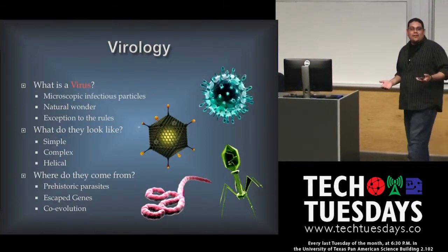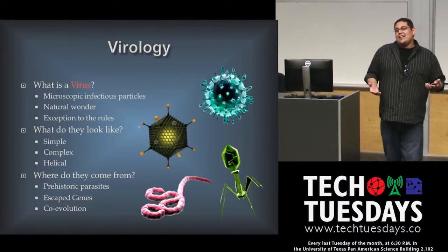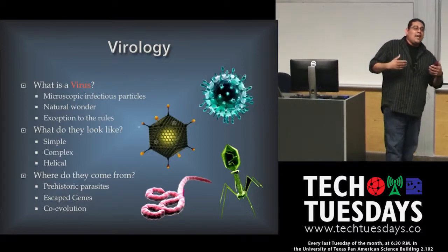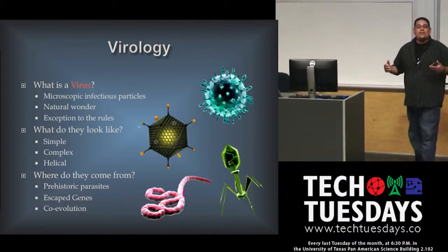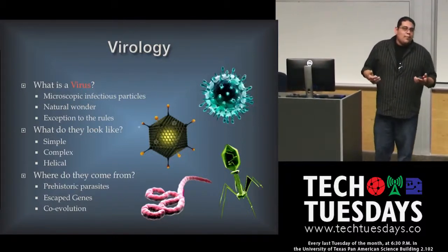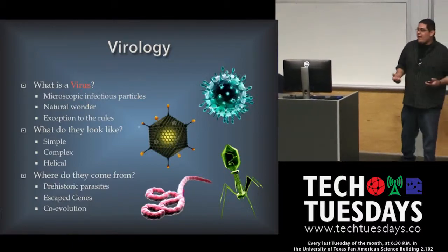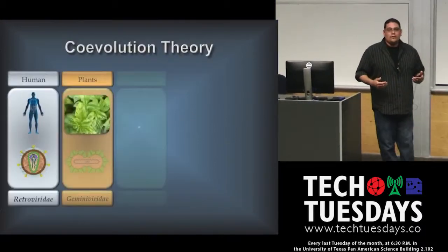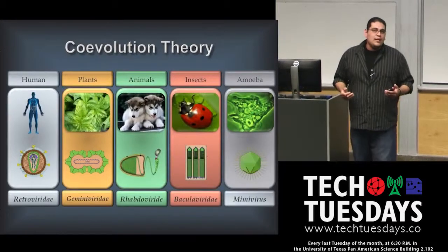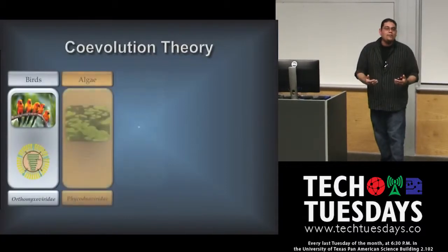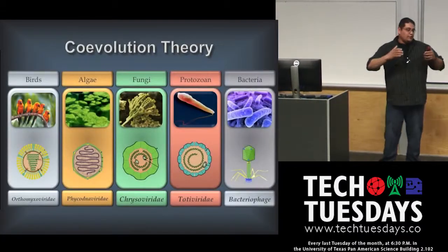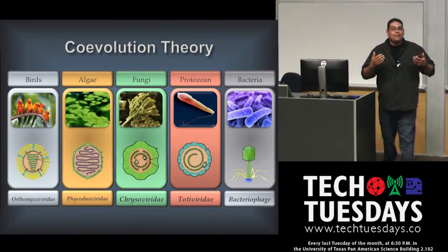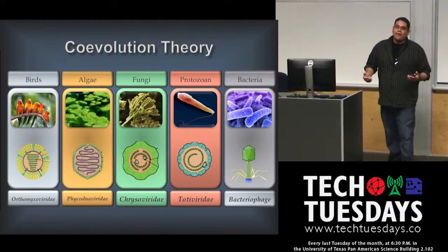Where do viruses come from? No one really knows. There are three basic theories: they could be de-evolved organisms or ancient microscopic parasites — highly unlikely. They could be escaped genes, random pieces of DNA that became parasitic entities. But most evidence today points to the co-evolution theory — every virus can be traced to a specific species. Every organism has a virus adapted specifically to infect it. There are viruses exclusive to plants, humans, amoeba, and fungi, and bacteriophages that infect bacteria.